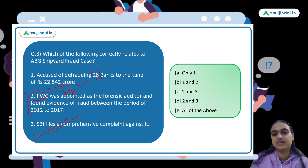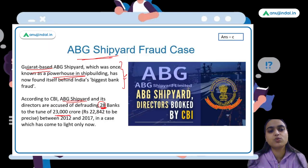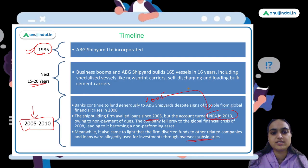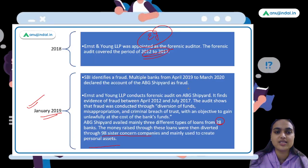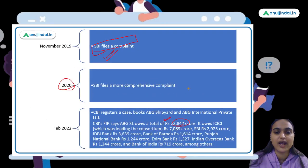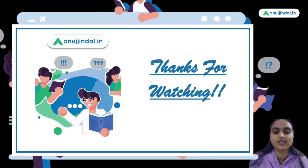Coming back to the question — identifying correct statements: the company has been accused of defrauding 28 banks for approximately 22,842 crores — correct. PWC was its forensic auditor — incorrect, it was Ernst & Young. SBI filed a comprehensive complaint against it — correct. So the first and third are correct, the answer is option C. This was all for today's session — thank you so much.